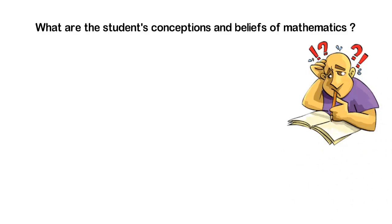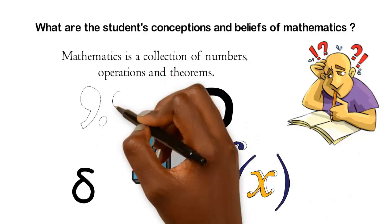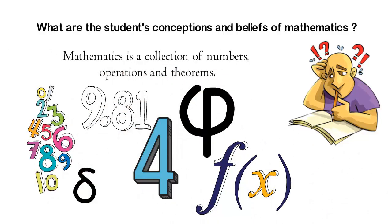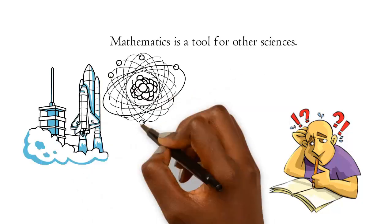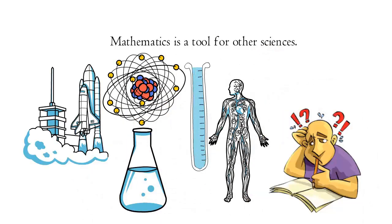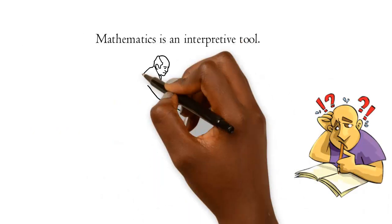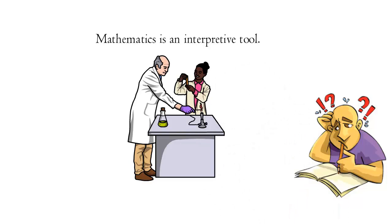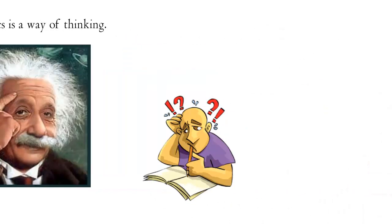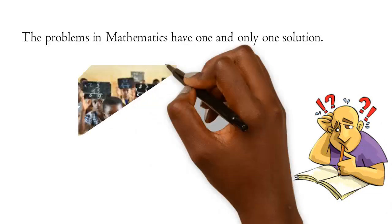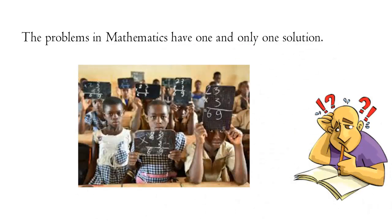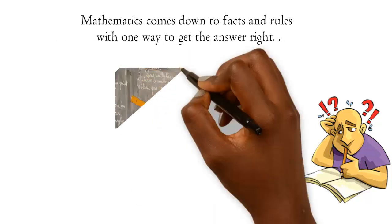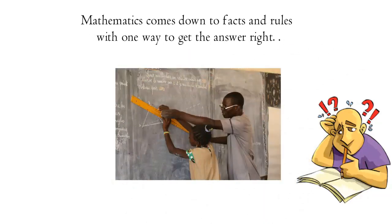Mathematics is a collection of numbers, operations, and theorems. Mathematics is a tool for other sciences. Mathematics is an interpretive tool. Mathematics is a way of thinking. The problems in mathematics have one and only one solution. Mathematics comes down to facts and rules with one way to get the right answer. You find a rule and get the answer.